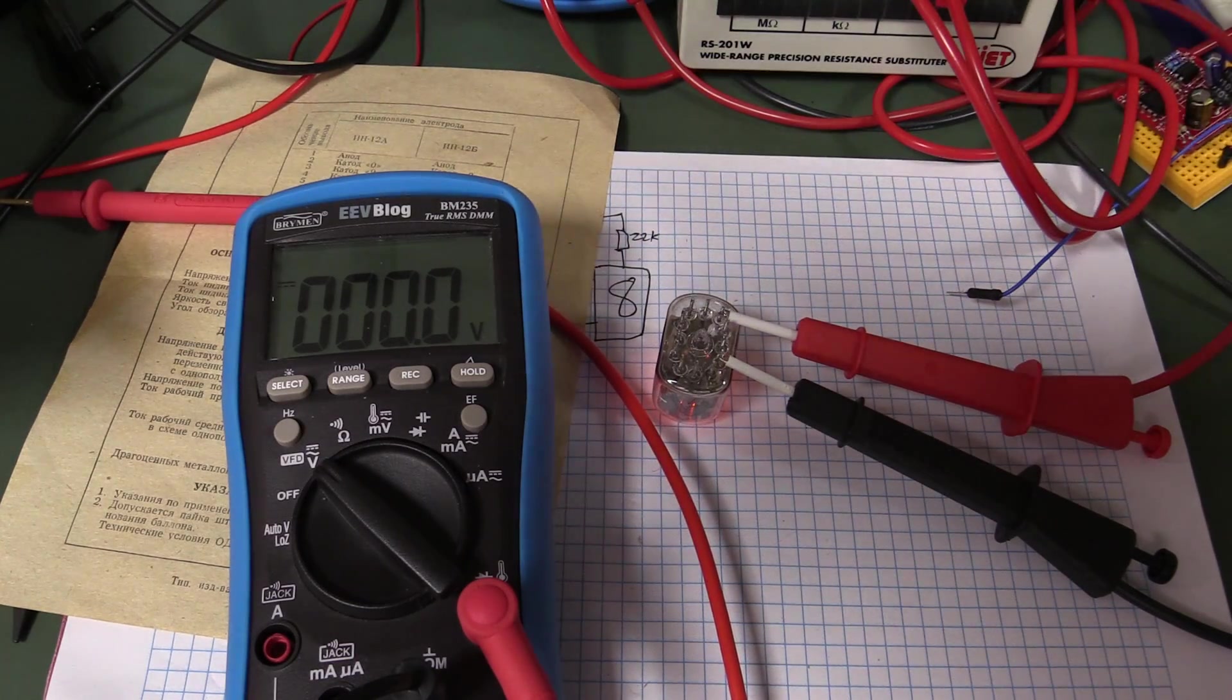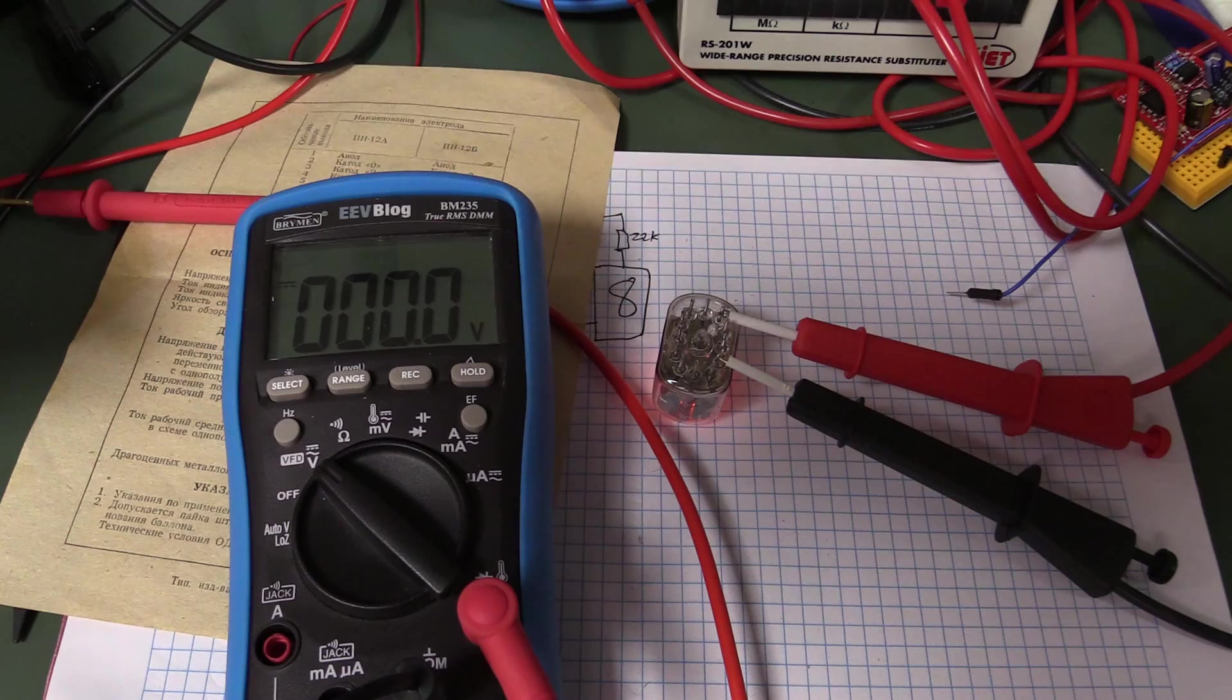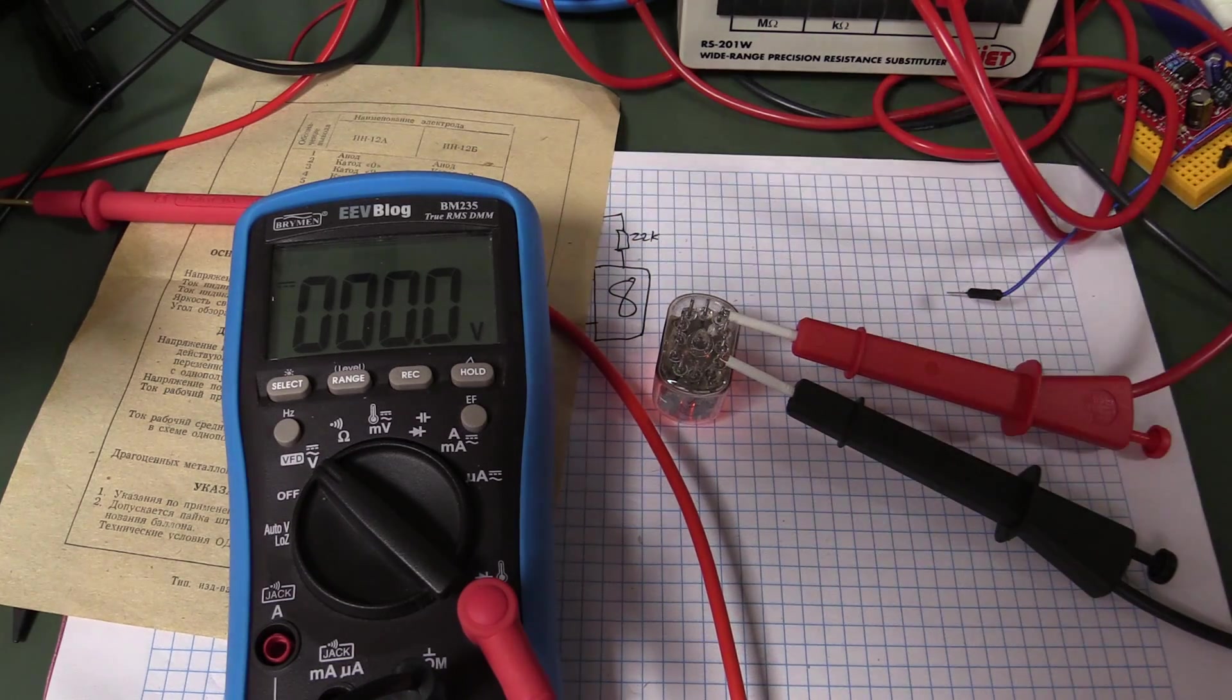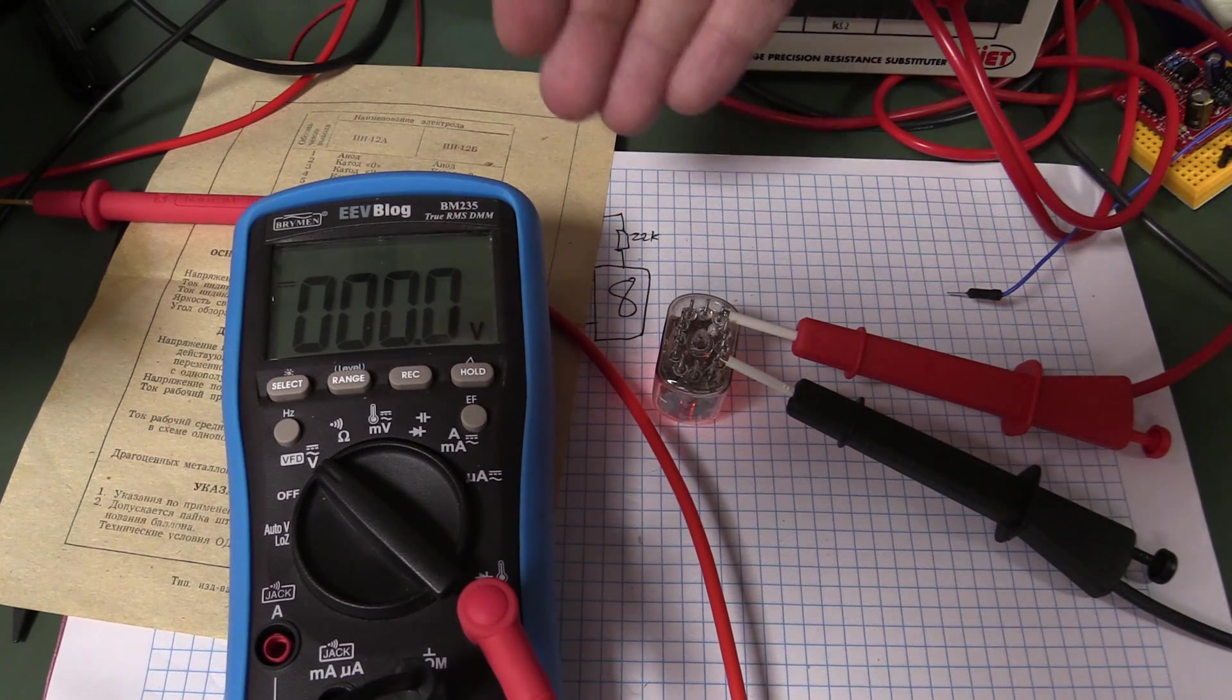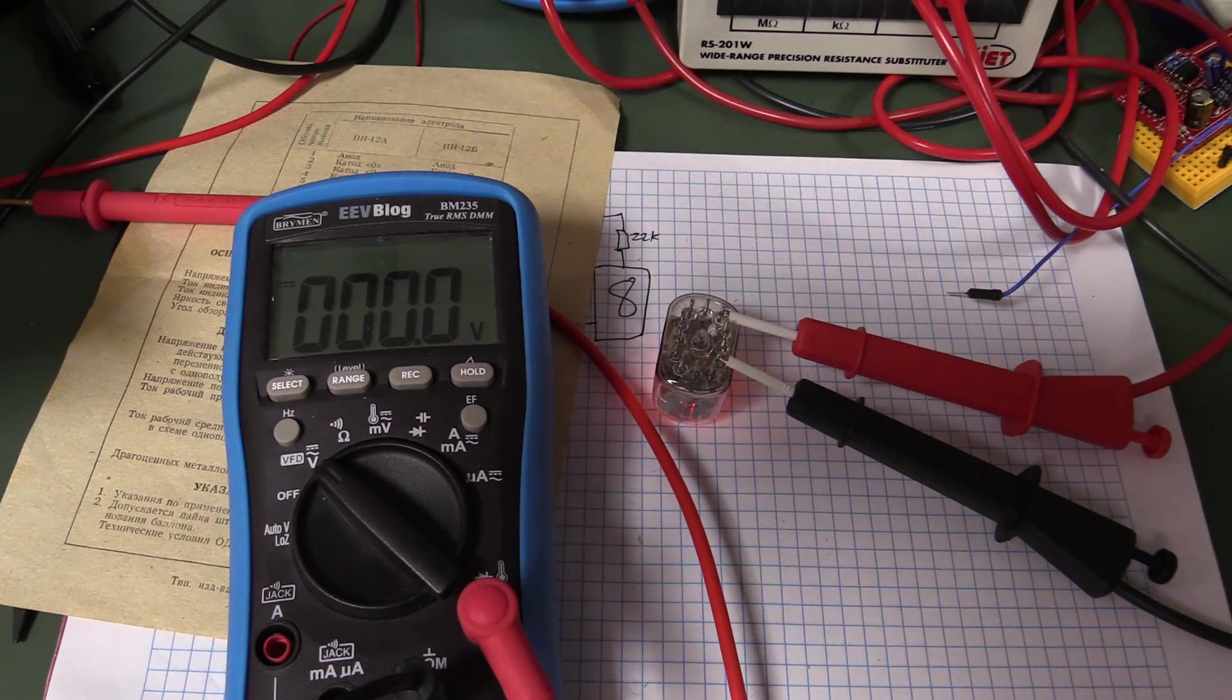That means that just for this particular Nixie tube, there's obviously great variation in this. So I could go and measure all eight. But yeah, and you're probably not going to get this from any data sheet. So that's the kind of open circuit voltage you need.